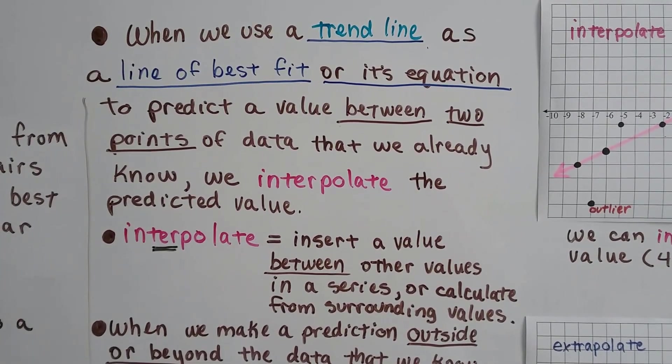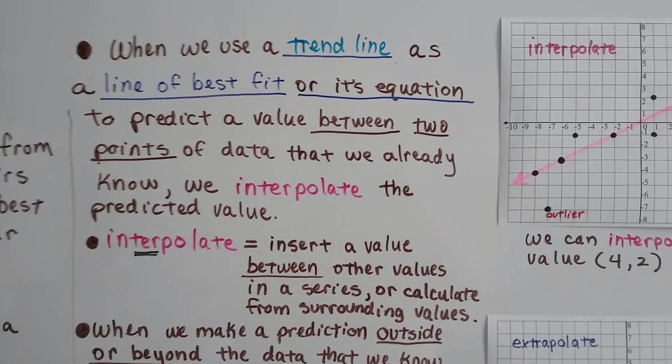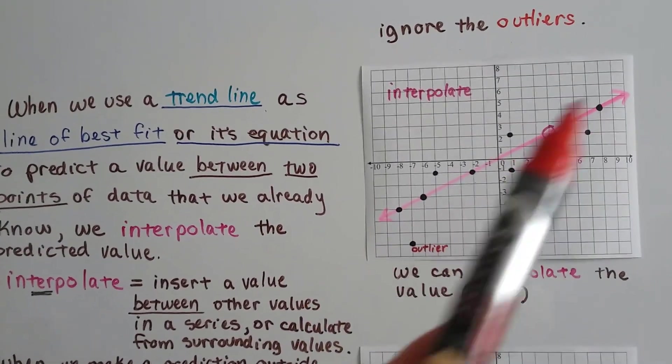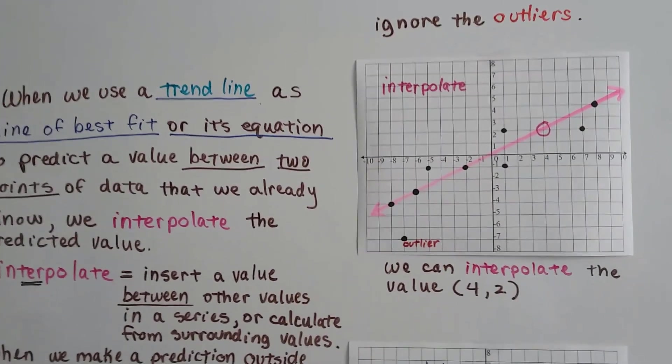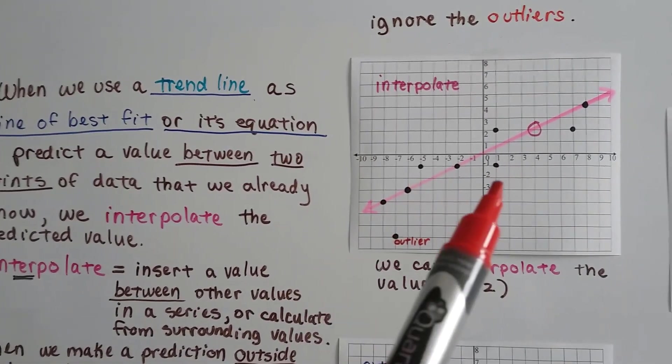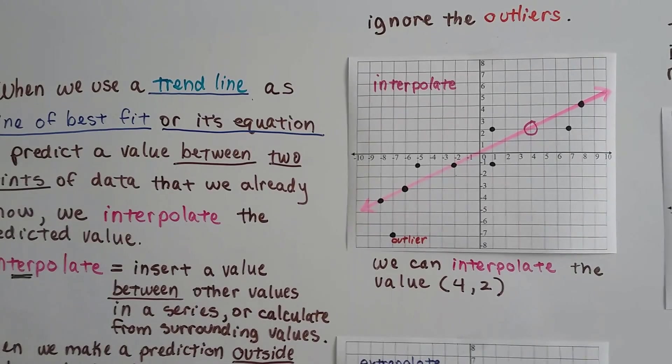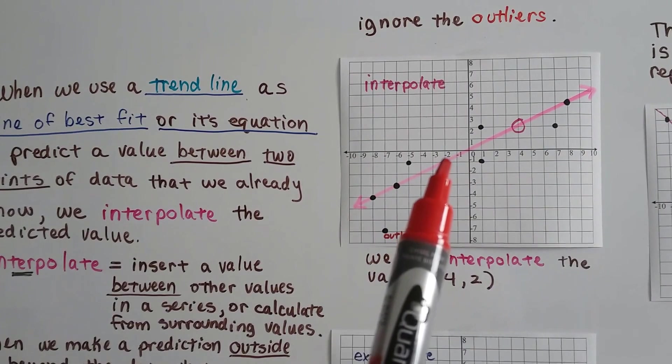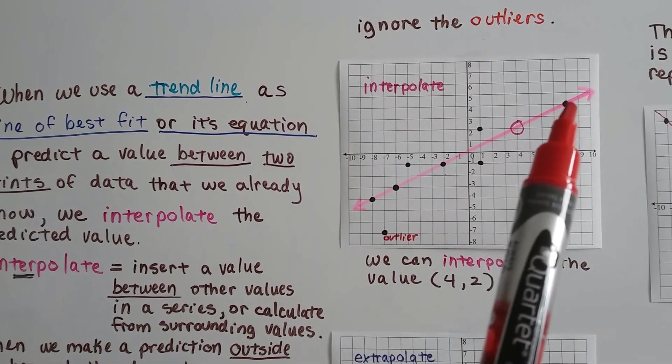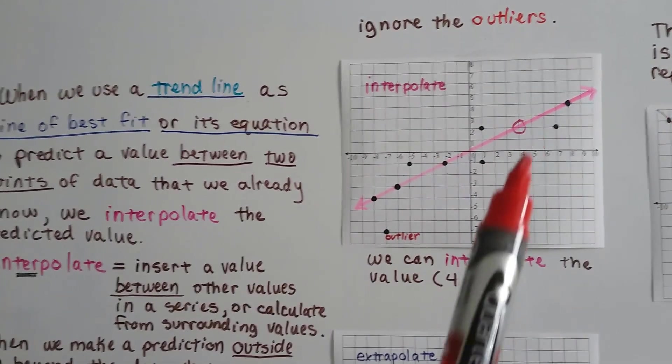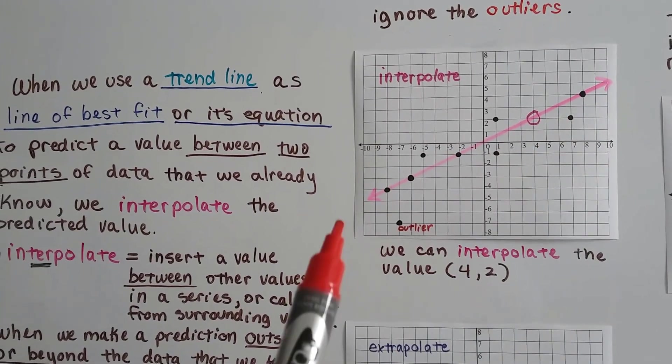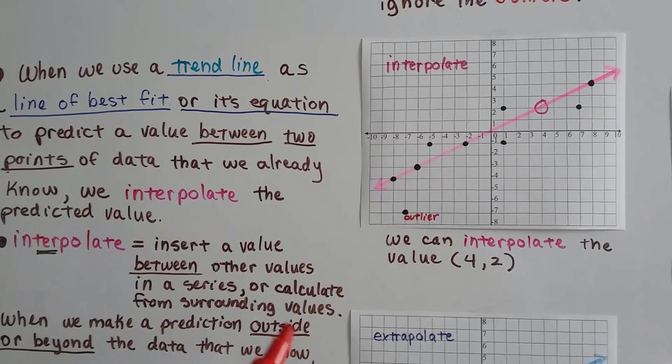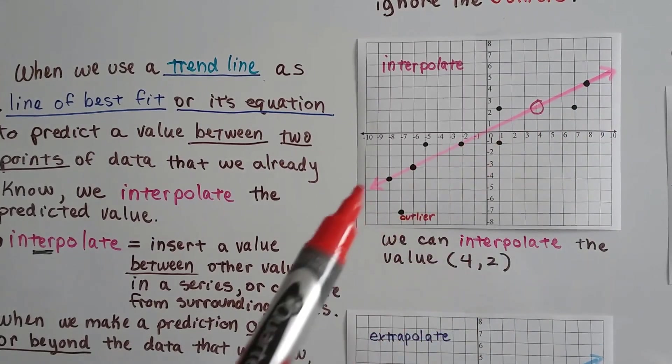Interpolate means to insert a value between other values in a series or calculate from surrounding values. So we have a cluster of points here. I drew a pink line through them. And you can see I've got points above and below the line. But we could interpolate that if this point's here and this point's here and this point's here and it's making a straight line and we've drawn the line through that point, that any point on this line would make an equation or it would be the answer to the data.